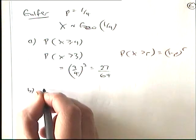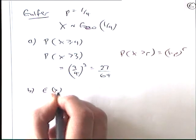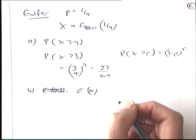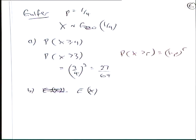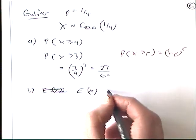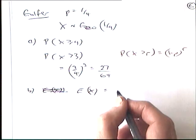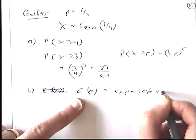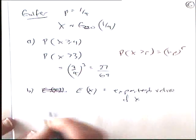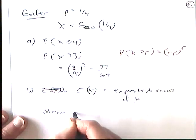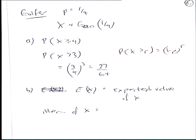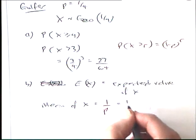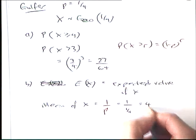Part B. Write down E of X. What's that about? The expected value of it. It means the same as the mean. So if you see that, you'd read that as the expected value of X. It's the same as the mean of X. So it's 4. Why is it 4? Because it's 1 over a quarter, which is 1 times 4. Because it's 1 over P. So it's 1 over a quarter. It's 4.